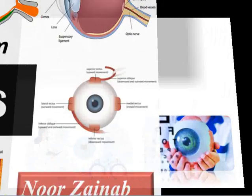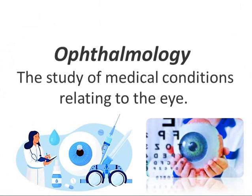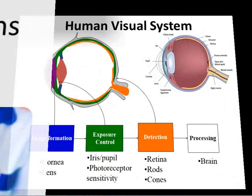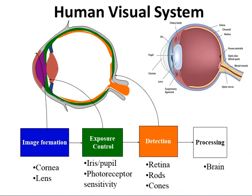The study of eyes is known as ophthalmology. The human visual system consists of image formation, in which the cornea and eye lens are involved. Exposure control involves the iris, pupil, and photoreceptor sensitivity. In detection, the retina is involved along with rods and cones. The human brain is involved in the processing of images.